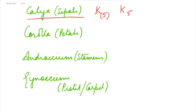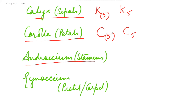Inner to the sepals lie the petals, called the corolla, represented as C, with the number of petals written below. If it is gamopetalous — meaning the petals are united — it is written in brackets; if the petals are free, there is no bracket. Inner to the corolla is the androecium, made up of stamens, abbreviated as A, with the number of stamens written below. If the stamens are united there is a bracket; if free, there is no bracket.